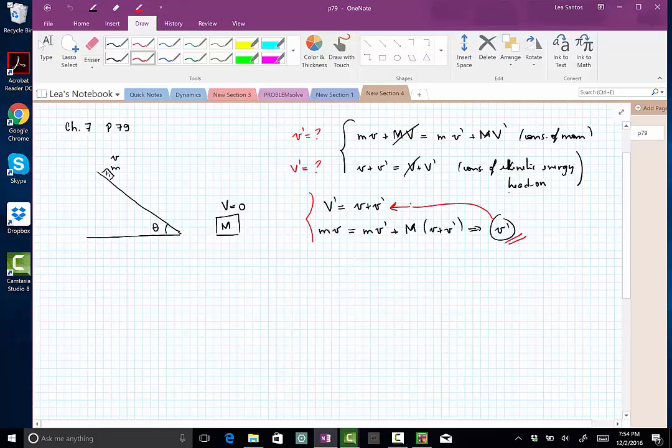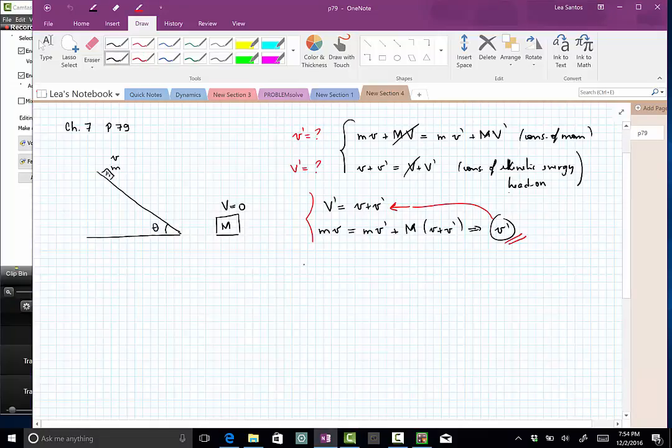Let's work a little bit more to find what is this V prime. So you see that the V prime involves this big mass and the little mass. So little m plus big M equals to little m minus big M, V.